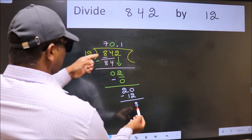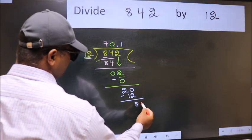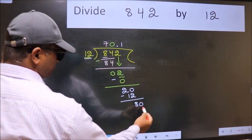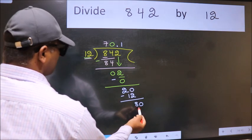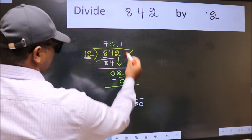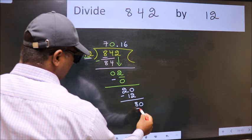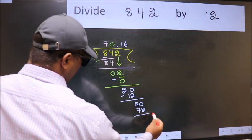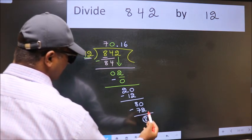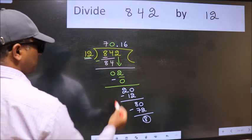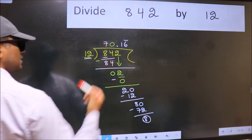8 is smaller than 12. We already have the decimal, so directly take 0. So, 80. A number close to 80 in 12 table is 12 times 6, 72. Now, we subtract. We got 8 again. That means we get bar on this number.